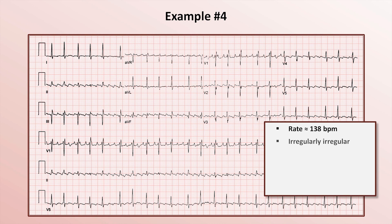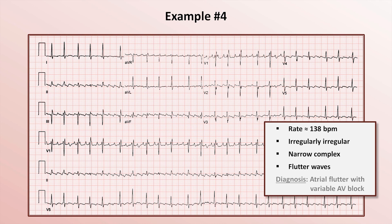It is irregularly irregular and has narrow complexes. The atrial activity shows flutter waves at a rate of about 300, best seen in the inferior leads and V1. Therefore, this tachyarrhythmia is atrial flutter with variable AV block.